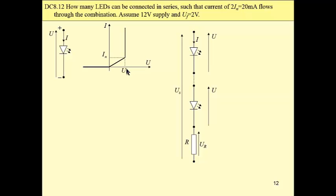Then, if we have 12 volt supply, the voltage drop across the combination of diodes connected in series should be less than 12. This is the voltage of K diodes connected in series, and it has to be less than 12, which means K should be less than 6.